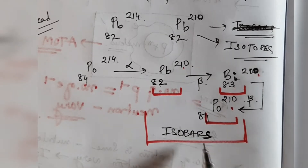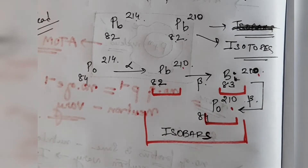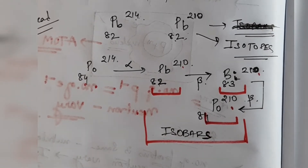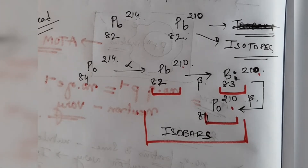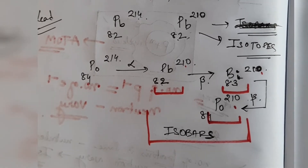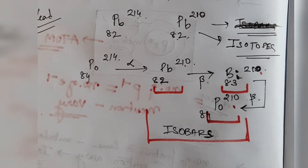You may wonder about the alpha and beta particles — that comes under radioactive disintegration, which will be covered when we go deeper into nuclear chemistry. But the key point is: for isobars, the mass number is the same while the number of protons is different; for isotopes, the number of protons is the same while the mass number is different.